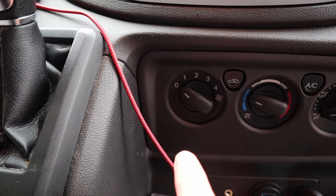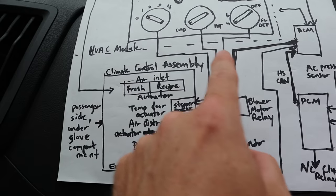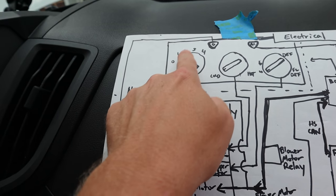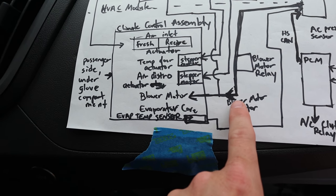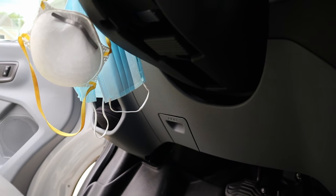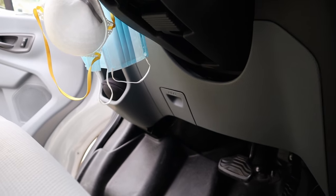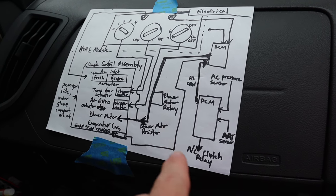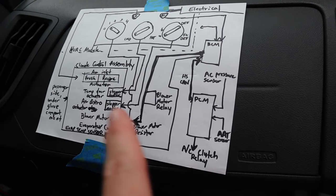When you enable the fan, the HVAC module talks through the BCM to activate the blower relay. Depending on the fan speed selected, a series of resistors are either in-line or bypassed, giving you different blower motor speeds. The blower motor resistors are plugged into the side of the blower housing. The blower motor relay is located in the fuse panel under the steering wheel. Also, wherever you see one of these relays, there are also fuses that apply.